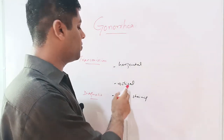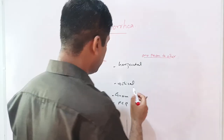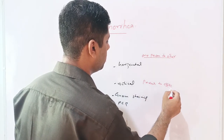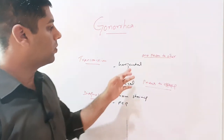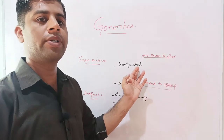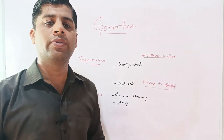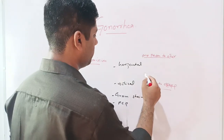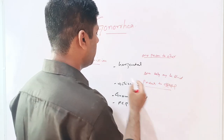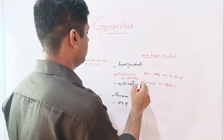Gonorrhea can be transmitted both horizontally and vertically. Horizontal transmission means spread from one person to another, while vertical transmission means infection transmitted from parent to offspring. Horizontally, gonorrhea is transmitted through sexual contact — oral, vaginal, or anal intercourse. Vertically, the disease is transmitted from the mother to the offspring through embryonic development, and the newborn baby may be blind, causing ophthalmic complications.